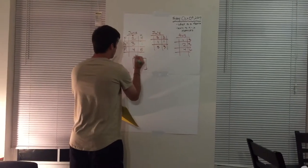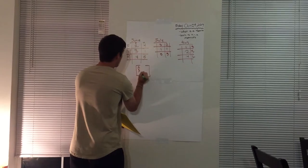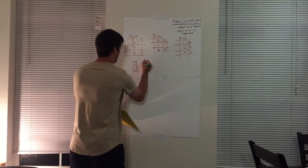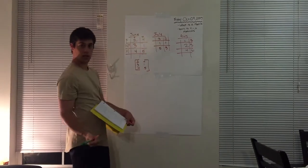So for inputting these data into a matrix, all you do is write down the same information from each month on the inside of this box as it is.